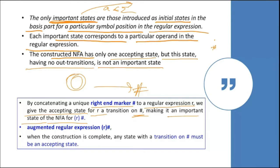If you think about a final state in an NFA, it may not have an outgoing transition, and we would say it is not an important state. To fix this, we augment R with a hash symbol and add one transition from the final state on hash to make it an important state. So when the construction is complete, any state with a transition on hash must be an accepting state.